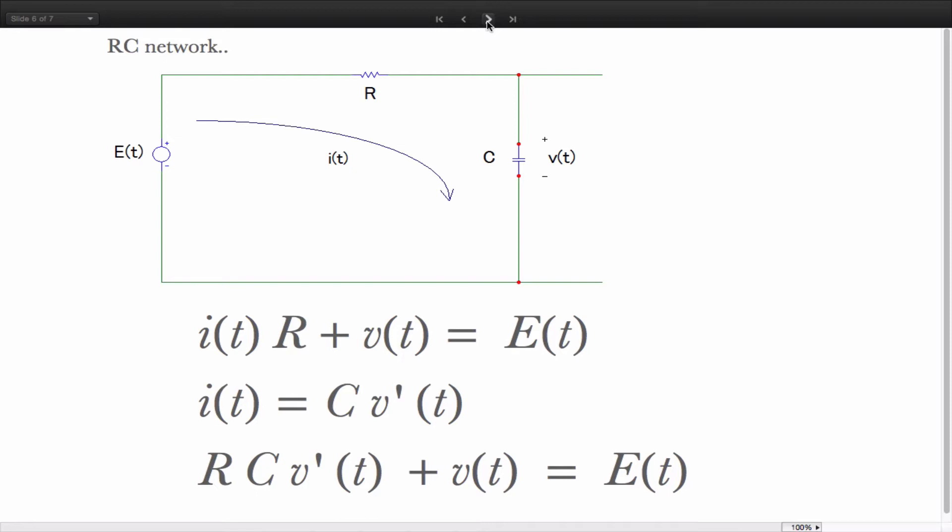As a quick aside, we might mention that this differential equation can actually represent the voltage on a capacitor in an RC network. From Kirchhoff's voltage law, we have that the voltage across the resistor, i times R plus the voltage across the capacitor, is equal to the applied voltage. Now, recognizing that for the series circuit, the current can be expressed as C times the rate of change of the capacitor voltage, and substituting that value into the first equation, we get this equation right here for the capacitor voltage.